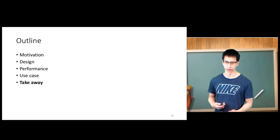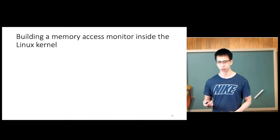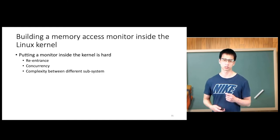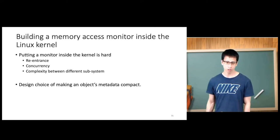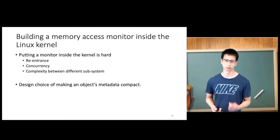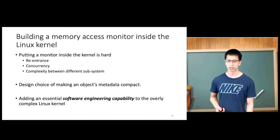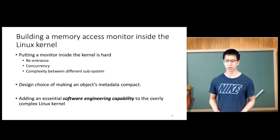To summarize the takeaways: we built a memory access monitor inside the Linux kernel. Putting this monitor inside the Linux kernel is hard, because of issues like re-entrance, concurrency, and complexity between different subsystems like the memory system. Also, the design choice of making object metadata compact and meaningful is not easy. With this, I'd like to conclude our work: we add an essential software engineering capability to the overly complex Linux kernel. Thank you all for listening — I'm open to questions.